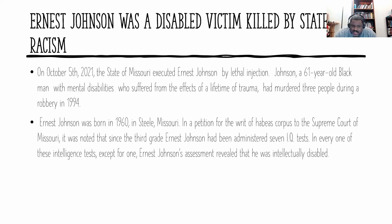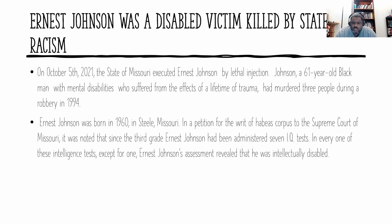He was born in 1960, and throughout his life he was given IQ tests — he never passed a third grade reading level. He had a brain tumor that was excised, resulting in worsening cognitive abilities, and he suffered from painful seizures throughout his life. Following Atkins, it should be unconstitutional to kill someone with mental disabilities, yet despite his documented disabilities and trauma, his execution was not stayed. The logic of the jury and governor was that he was a criminal offender who understood what it meant to kill — that his disability and mental deficits did not affect anything.